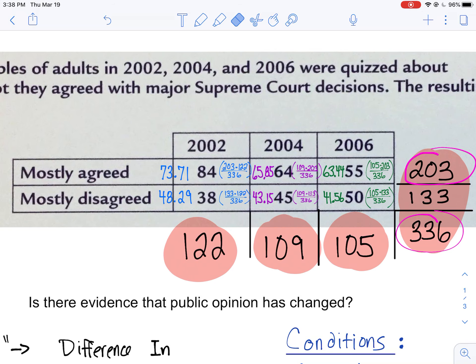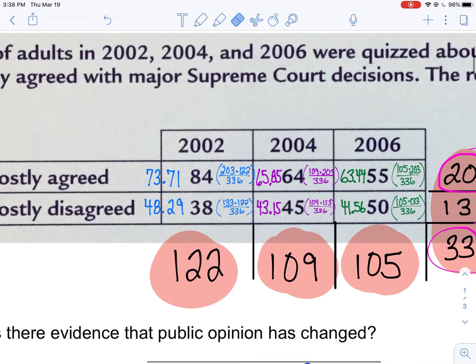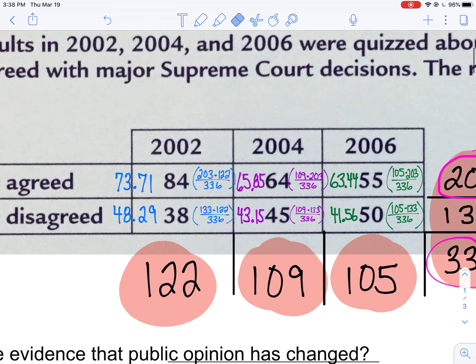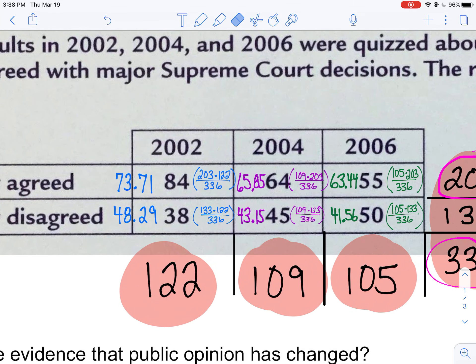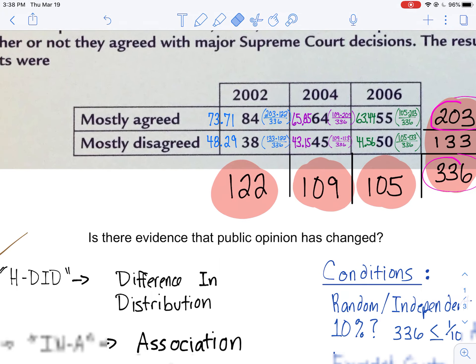So what I'm looking for is, is there evidence that public opinion has changed? So I'm looking to see if the proportions from 2002, 2004, and 2006 differ. Now chances are they're going to differ a little bit, but is it significant enough to say that there really is a difference?